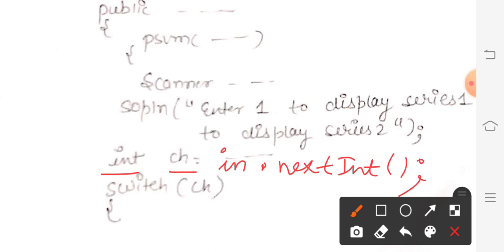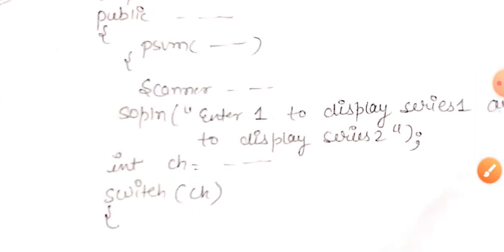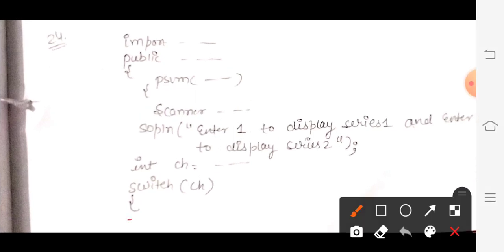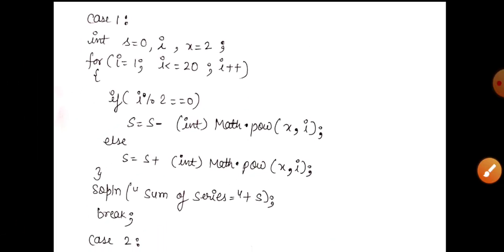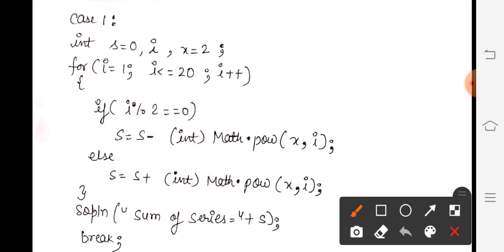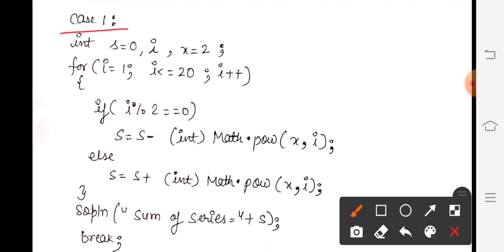So if you have given 1, then it will go on the switch. Switch(ch), then opening of this switch, opening key. Then come on the next page. Now start with case 1. Case 1 will have sum of the series from 1 to 20. So take it here: for(i = 1; i <= 20; i++), and i will be of integer type.